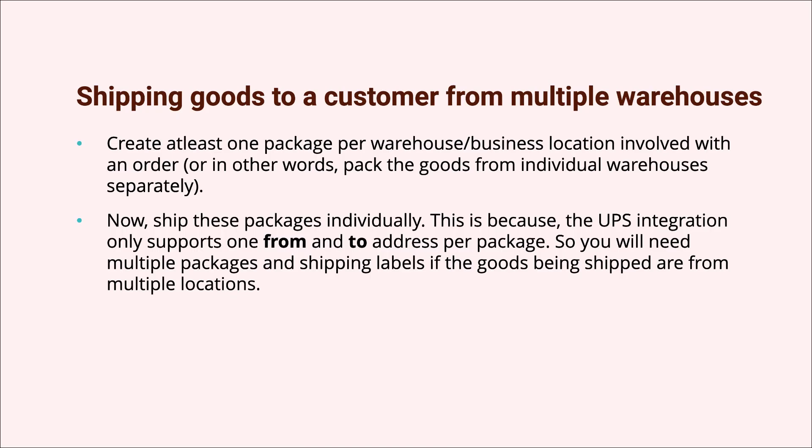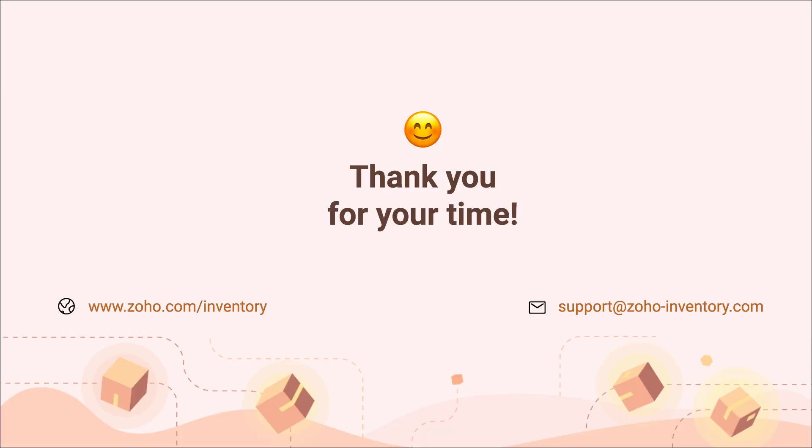Last but not least, if you want to ship a sales order that contains items from different warehouses, make sure that you record individual packages for individual warehouses and ship them separately. If you don't do this, the goods can only be picked from one location, since step one allows you to enter only one "from" address.